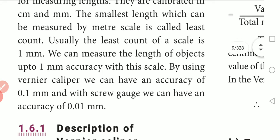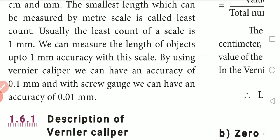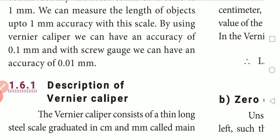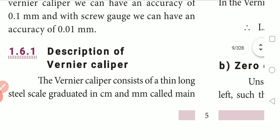We can measure the length of an object up to 1 millimeter accuracy using a meter scale. Using the vernier caliper, we can achieve an accuracy of 0.1 millimeter. For the screw gauge, we use an accuracy value of 0.01 millimeter. That is why we use the vernier caliper for more precise measurement.